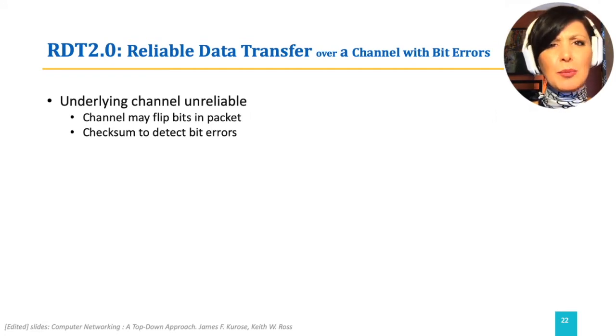But what does unreliable mean? In this step, the underlying channel still delivers all the packets, so no packet loss. However, bits could be corrupted and therefore flipped. How do we recover from these errors?